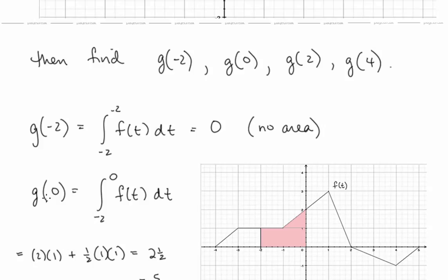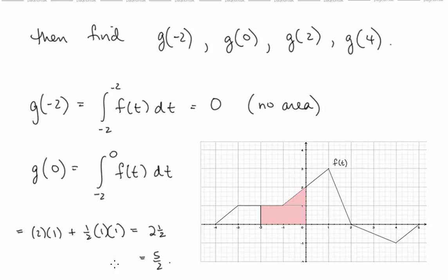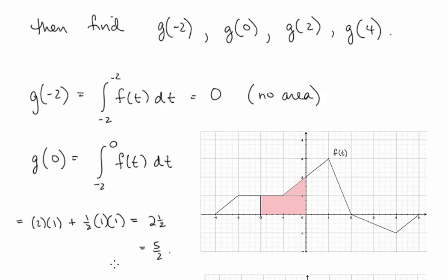For g(0): g(0) is the integral from negative 2 to 0 of f(t), which is this area from negative 2 to 0. We compute that by taking the area of the rectangle plus the area of the triangle: 2×1 + ½×1×1 = 2½, or 5/2. That's g(0).